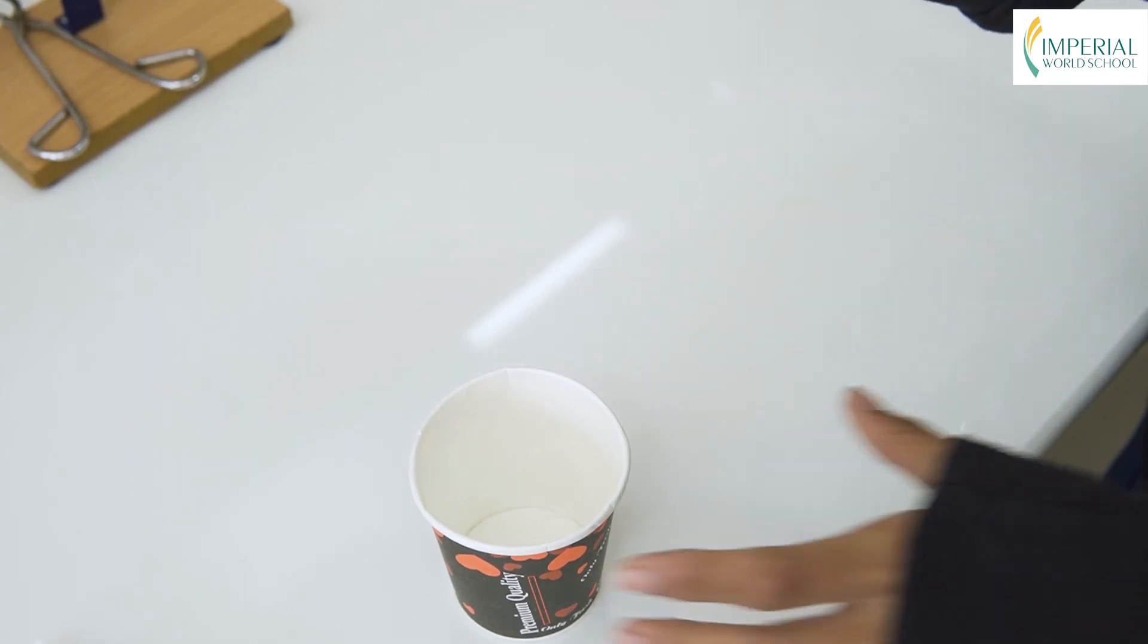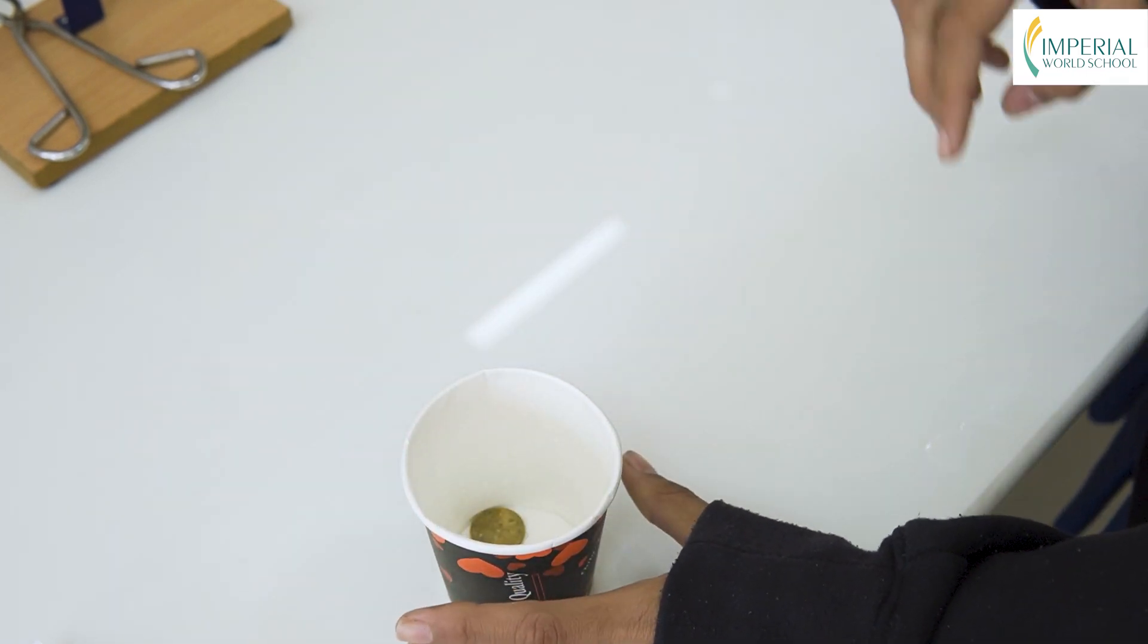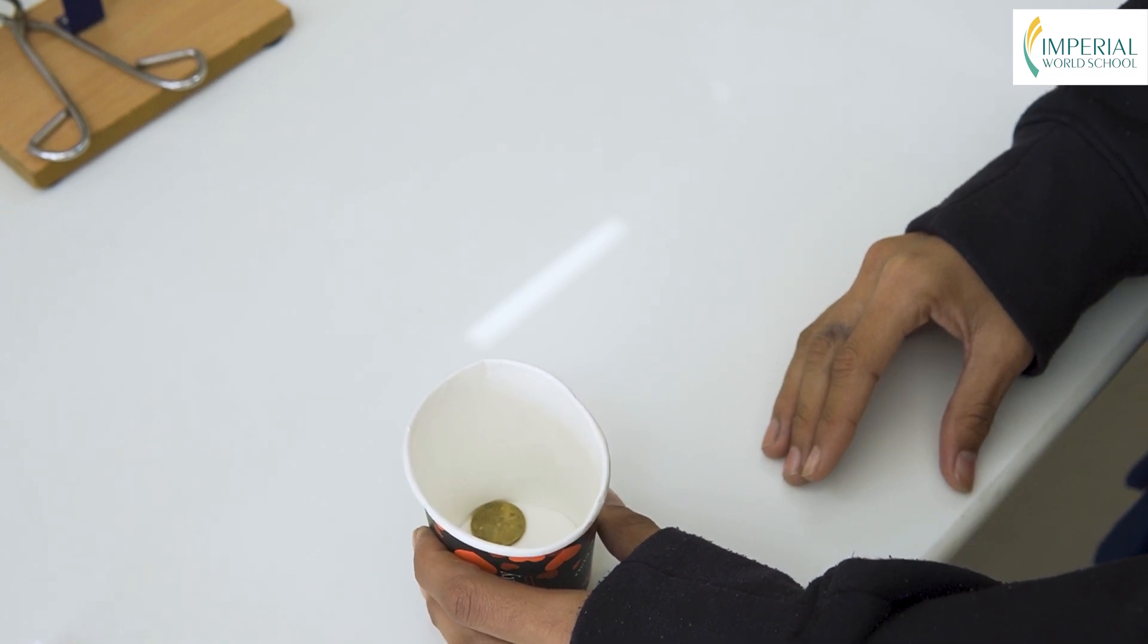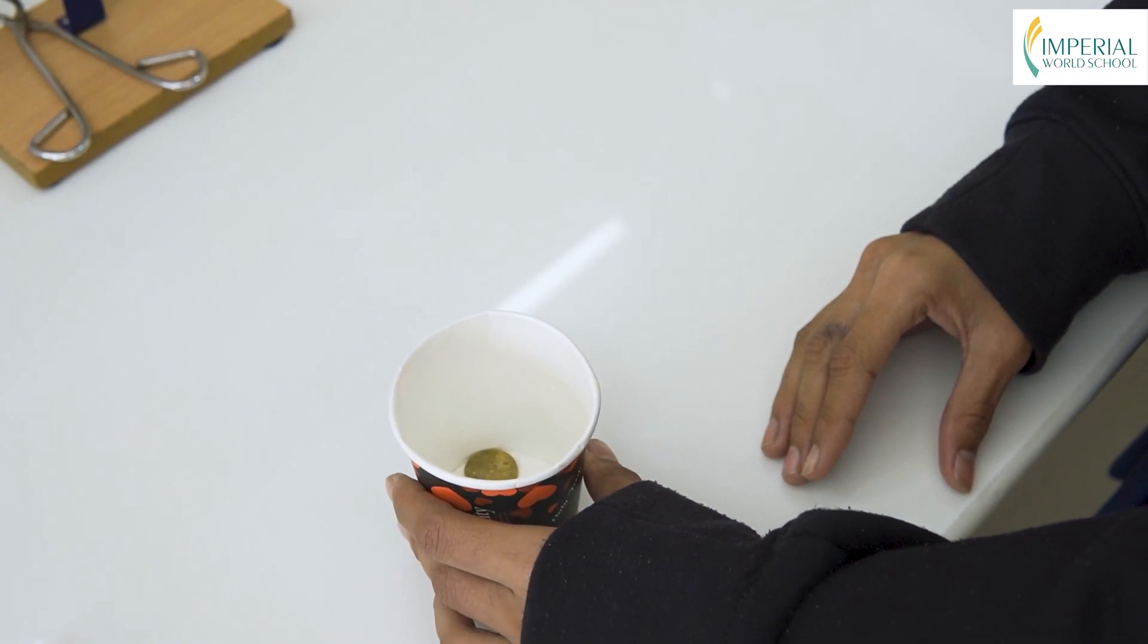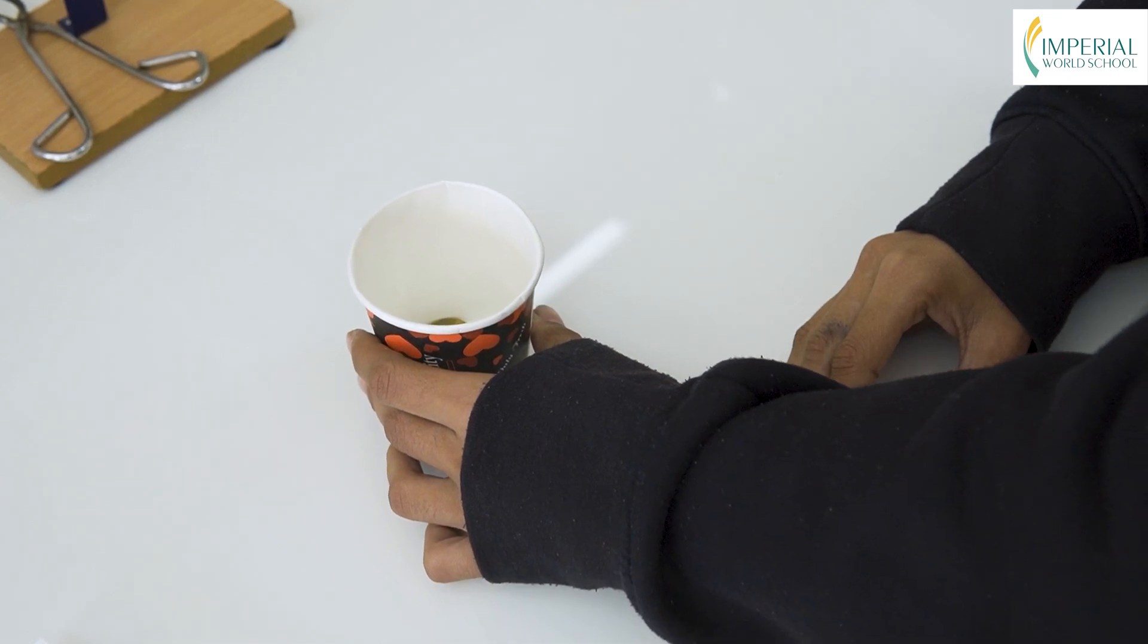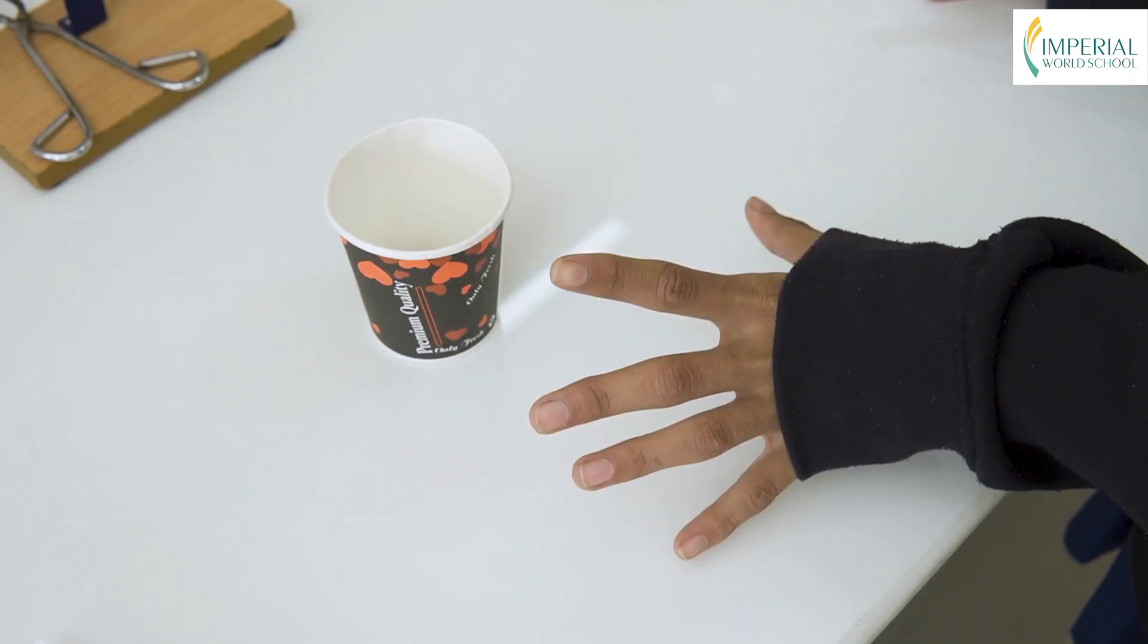Now I'm going to place this coin inside the paper cup. You can see the coin inside the paper cup, but now I'm slowly going to move the paper cup front. You can no longer see the coin inside the paper cup.